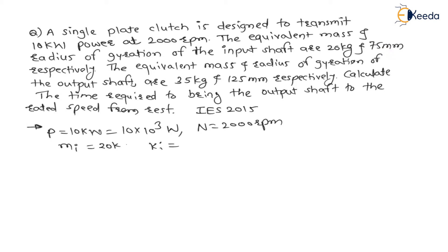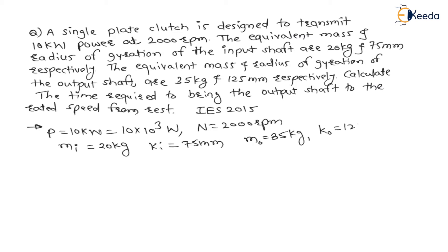So the equivalent mass for the input shaft is 20 kg and radius of gyration is 75 mm. The equivalent mass and radius of gyration of the output shaft are 35 kg and 125 mm respectively. Therefore M₀ = 35 kg and K₀ = 125 mm.